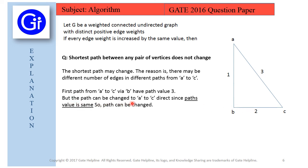But the path can be changed to A to C direct. So this is also true, we can change the path from A to C, the direct A to C, and the path value is 3. Since path value is same, so path can be changed. Hence statement Q is wrong because statement Q is stating that the shortest path between any pair of vertices does not change, but here we can easily change this because both path values are same.